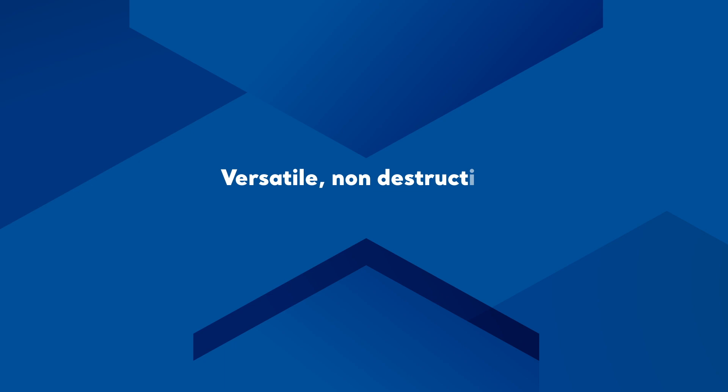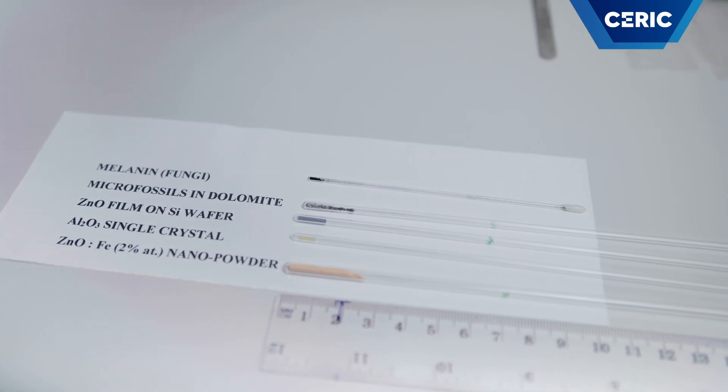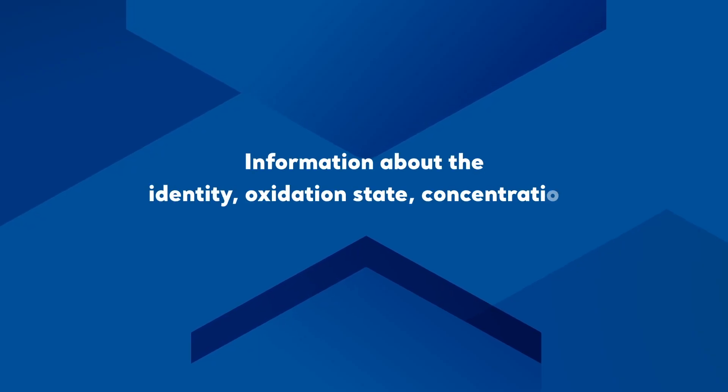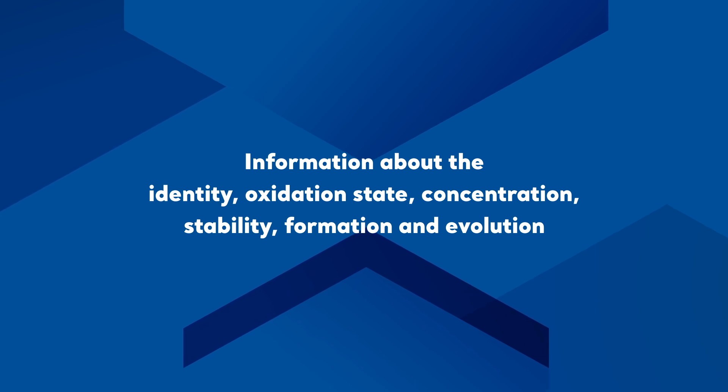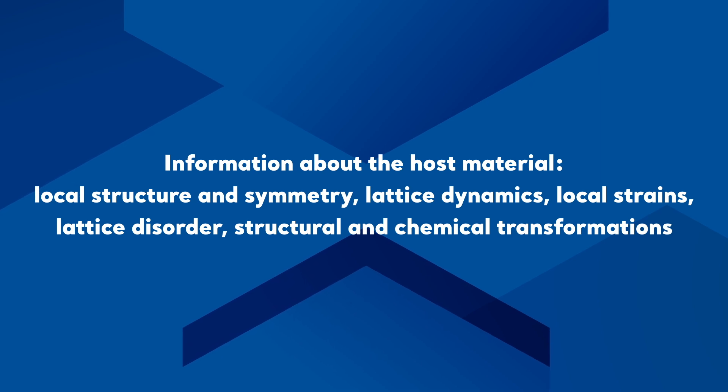EPR is a versatile, non-destructive, highly sensitive analytical method. It can detect concentrations of paramagnetic species as low as 10 to minus 4 percent. The samples can be in powder form, single crystals or films cut to sizes compatible with the quartz EPR tubes. However, the film substrate should have higher electrical resistivity and a very low content of paramagnetic impurities. The EPR characterization of the paramagnetic species involves the determination of their identity, oxidation state, concentration, stability, formation and evolution. Some species are also used as paramagnetic probes to obtain information about the host material, such as local structure and symmetry, lattice dynamics, the presence of local strains, and the degree of lattice disorder.